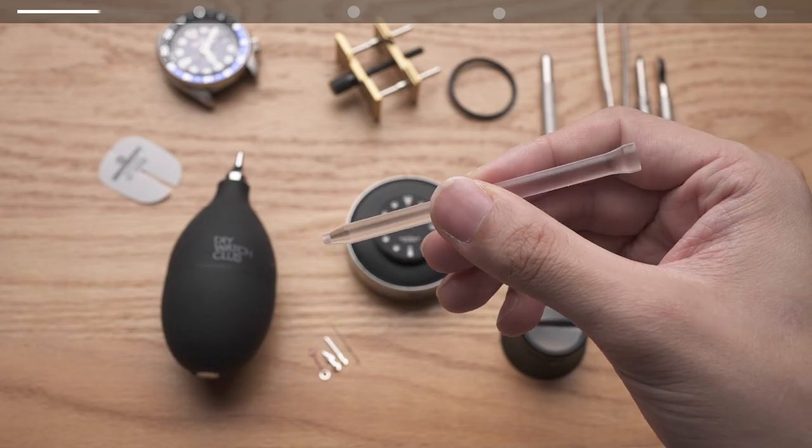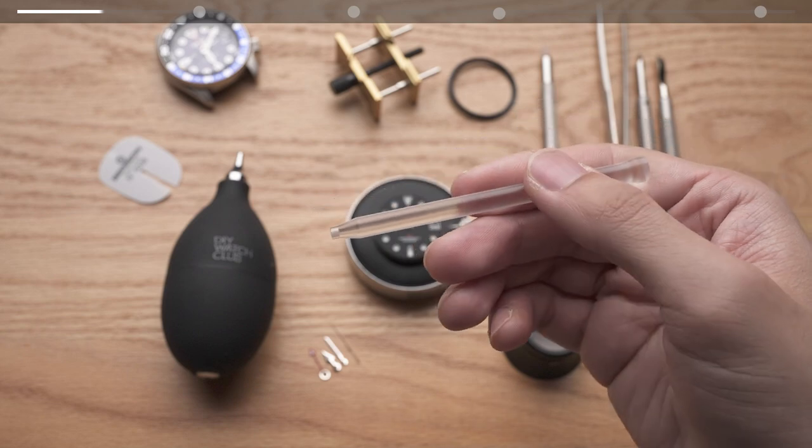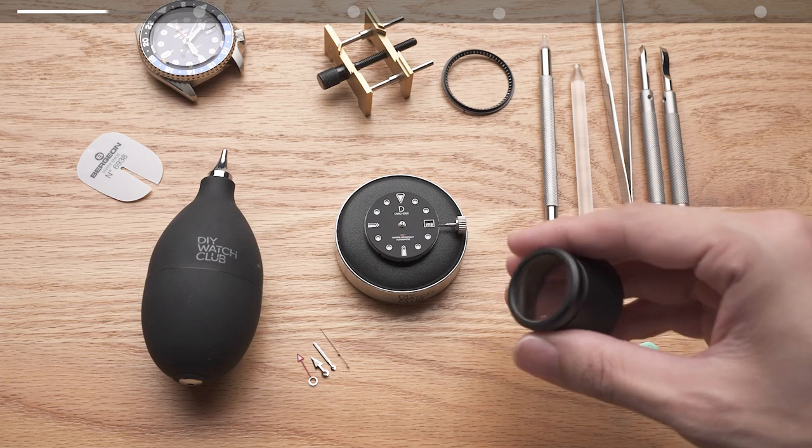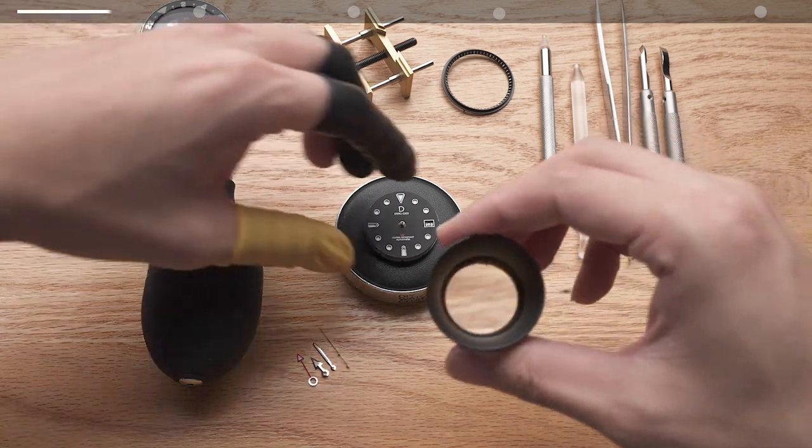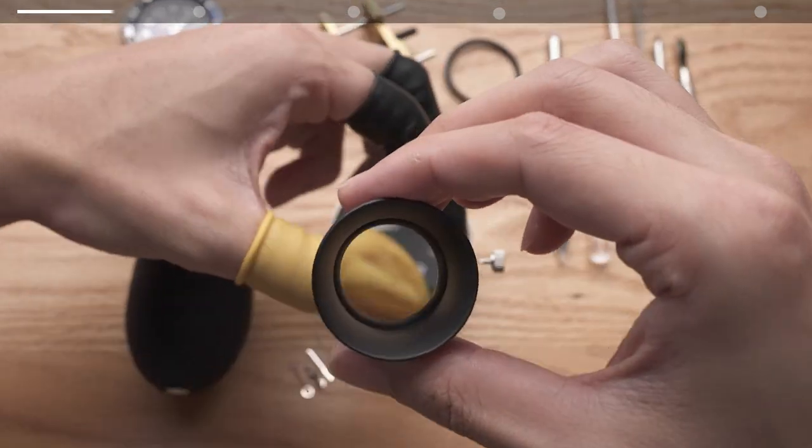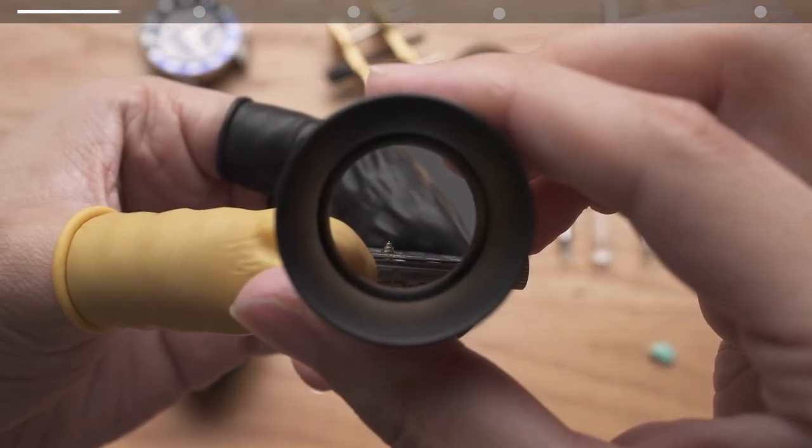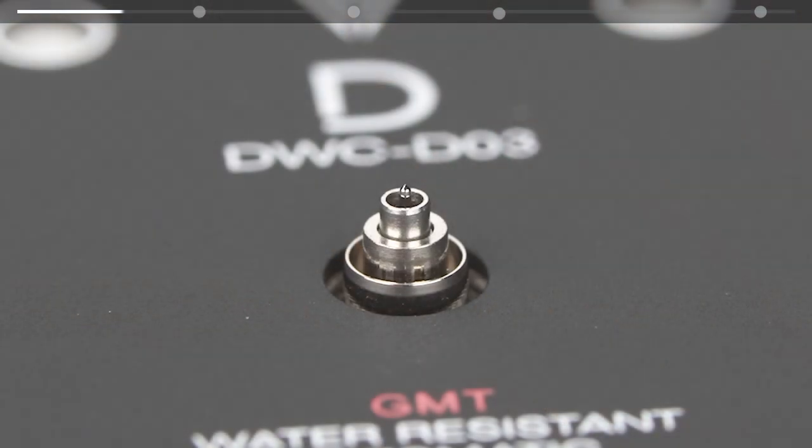The GMT hand requires a specific tip. We have a dedicated tool for this. Before we start, I recommend taking a good look at the movement using a loupe if you have one. Be aware of how small and delicate the smallest post is and be careful not to bend it during the hand installation process. This is where you'll install your sweeping second hand after the hour and minute hands are set.